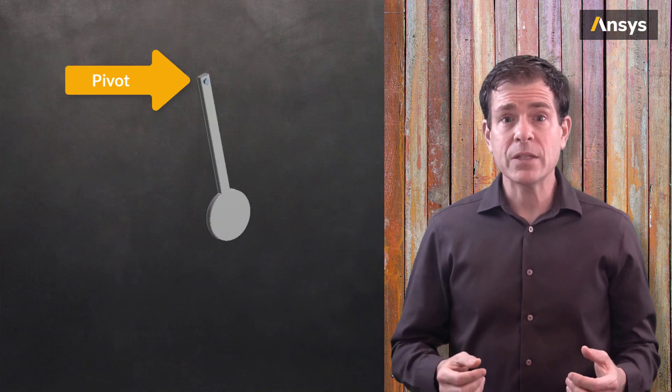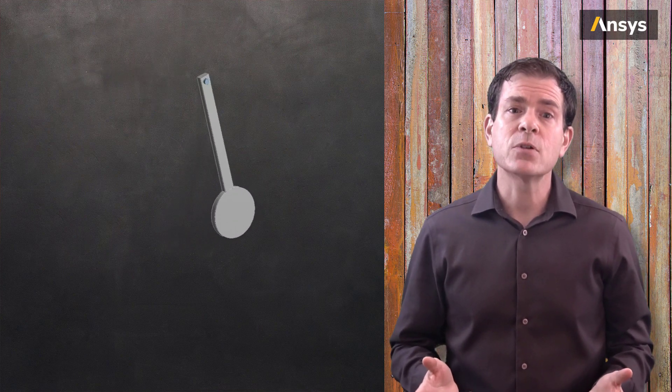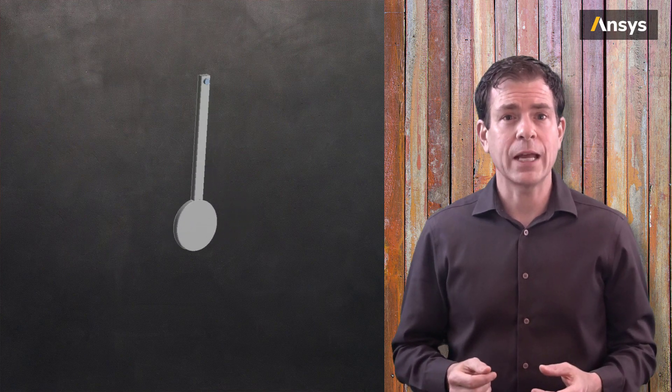Typically, the pivot will be designed to minimize the frictional loss. But in this case, we illustrate what happens when there is appreciable friction at the pivot.